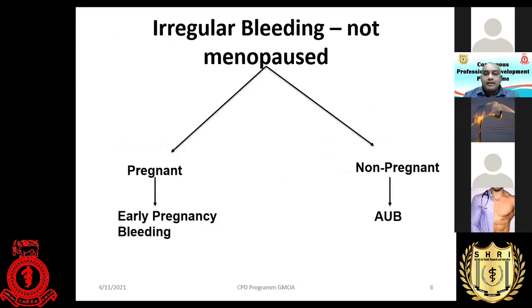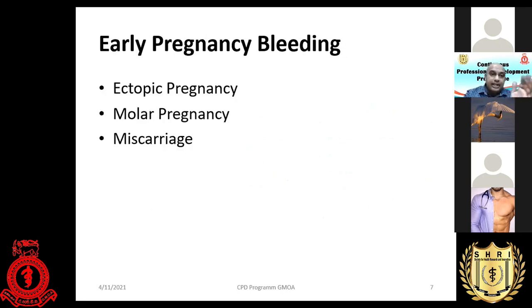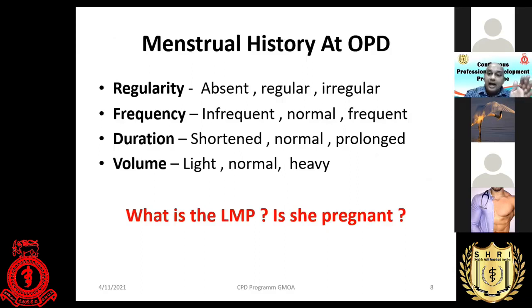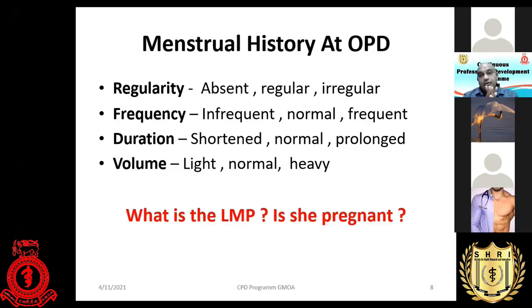If the patient is not pregnant, we call that category abnormal uterine bleeding. So the practical approach is: menopause or not — if menopause, post-menopausal bleeding; if not menopause, pregnant or not — if not pregnant, abnormal uterine bleeding. That is today's topic, and this approach is very useful at your setup.